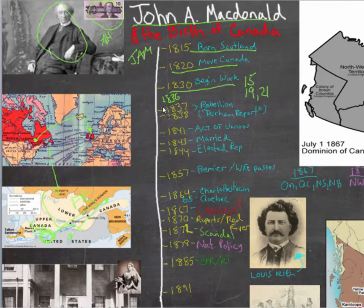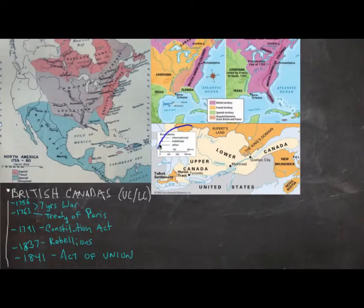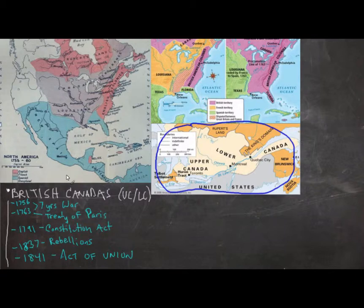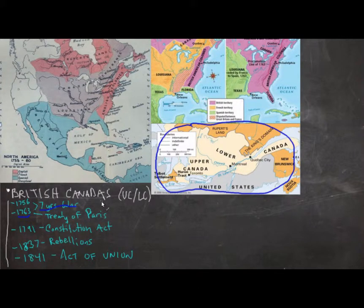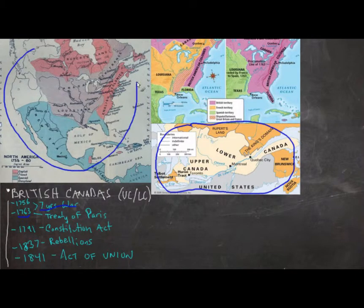Before we continue with his professional and political life, we should probably talk about how Canada came to being and what it was like in 1836. This area was officially known as British Canada. To understand how it came about, we have to rewind to 1763, which was the end of the Seven Years' War — essentially the first global war. The British Empire, the French Empire, the Prussian Empire, the Spanish Empire, and the Austrian Empire fought all over the globe, but for our concern, it was their fighting in North America.